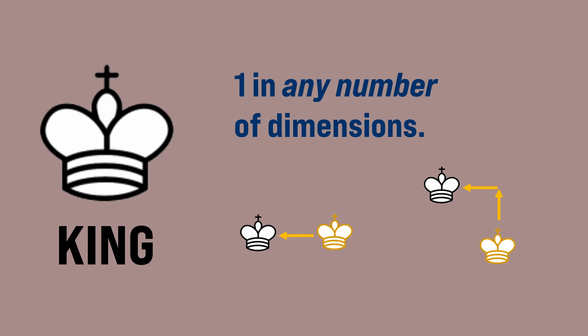A king moves one unit in any number of dimensions. Here we see a king moving in one dimension, and here we see it moving in two dimensions. In 5D chess, the king can move one, two, three, or four dimensions.